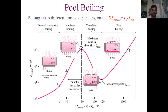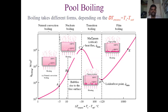Natural convection boiling exists when the excess temperature lies between 1 to 5 degrees centigrade. Nucleate boiling exists when the excess temperature lies between 5 to 30 degrees centigrade. Transition boiling exists when the excess temperature lies between 30 to 120 degrees centigrade. Beyond 120 degrees centigrade, the regime is called film boiling.